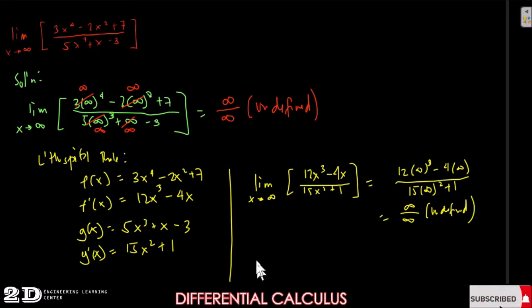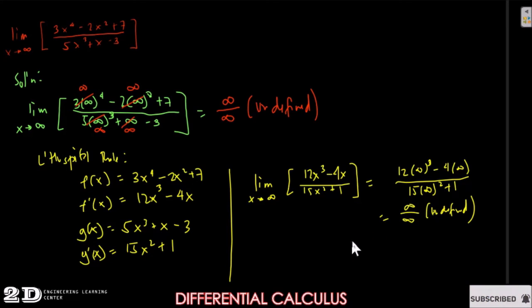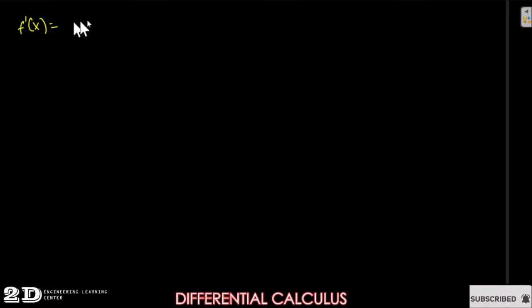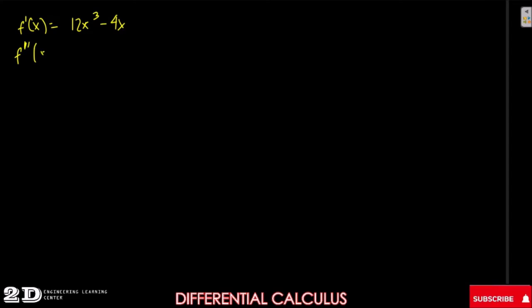Since the result is still undefined, we go one step further and apply L'Hôpital's Rule a second time using the second derivatives. From f'(x) = 12x cubed minus 4x, the second derivative f''(x) = 36x squared minus 4.